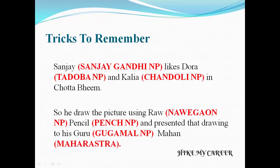Let's see about the story. The story is about Sanjay — Sanjay is the main character. Sanjay means Sanjay Gandhi National Park. He likes Dora and Kaliya in Chhota Bheem.